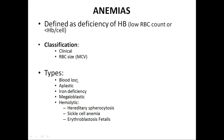Blood loss anemia, also called hemorrhagic anemia, can be acute or chronic. In aplastic anemia, there is a bone marrow disorder. In iron deficiency anemia, RBCs fail to mature. In megaloblastic anemia, there is vitamin B12 deficiency. Vitamin B12 is an essential factor for DNA synthesis and RBC maturation, so its deficiency results in immature, big-sized RBCs. In hemolytic anemias, there is excessive hemolysis of RBCs.